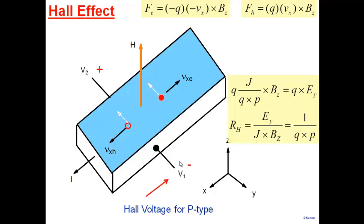Measuring this voltage: I know the dimensions of my device, so I know E_y; I know the current flowing and the cross-sectional area, so I know current density J; and the magnetic field B_z is applied, so I know its value. The ratio E_y / (J × B_z) is called the Hall coefficient R_H of the material, and R_H = 1/(q×p).